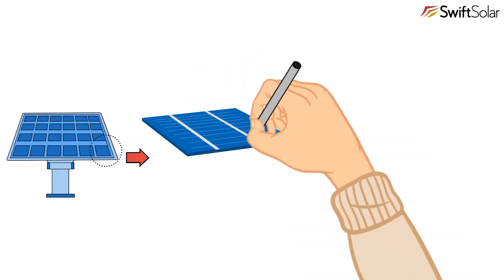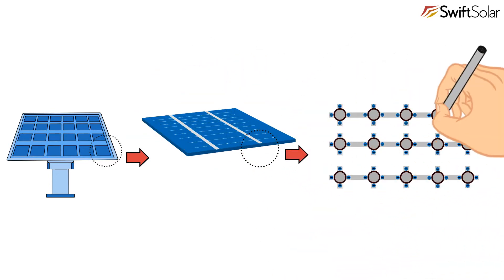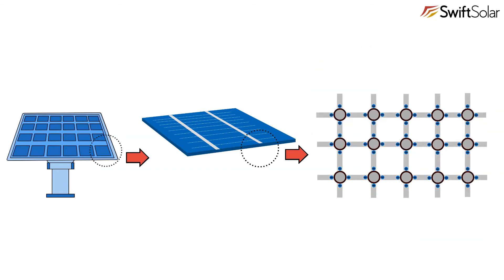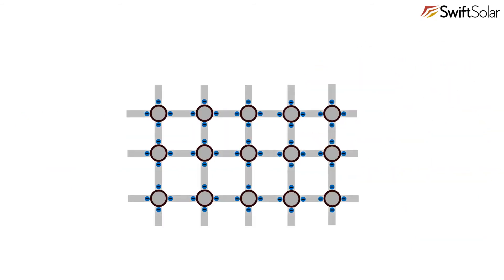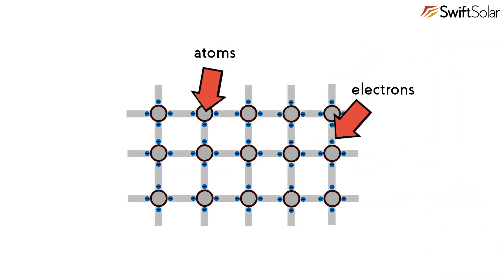To see how they work, let's zoom in on the atoms that make up the solar cell. Solar cells are made of semiconductors, materials which normally don't allow current to flow but do under certain conditions. This lattice here represents the atoms and electrons that make up a semiconductor. Most solar cells are made of silicon, but other semiconductors such as perovskites can also be used.